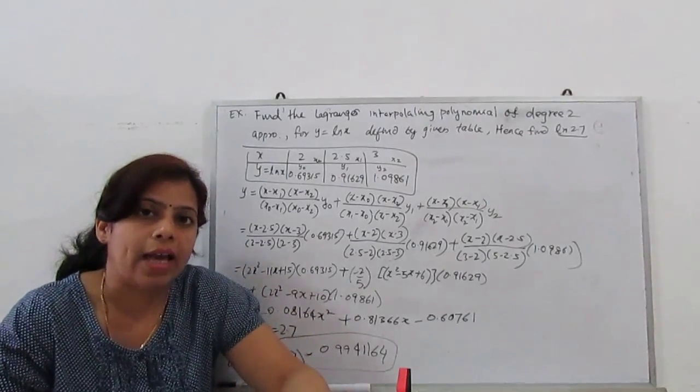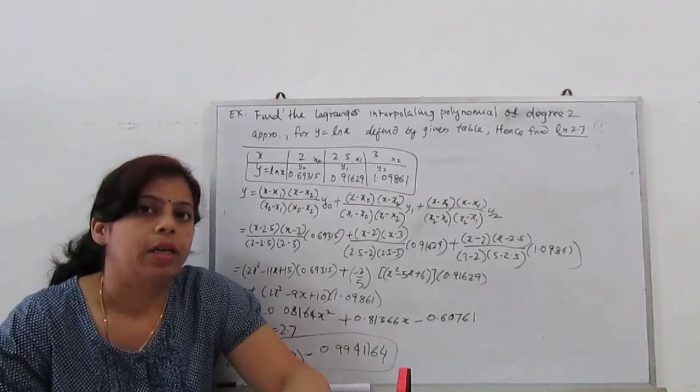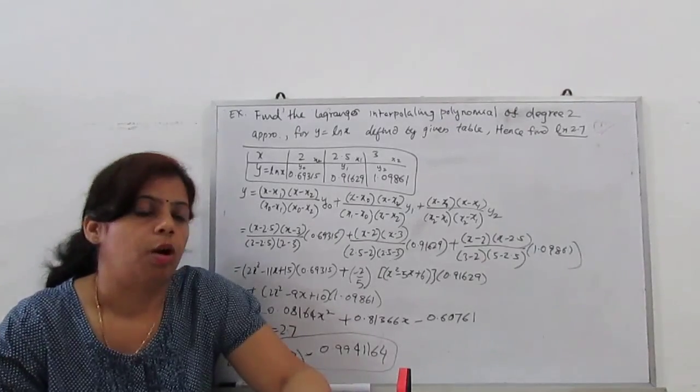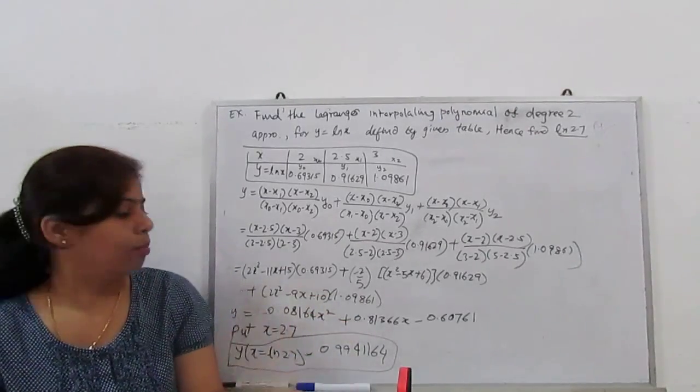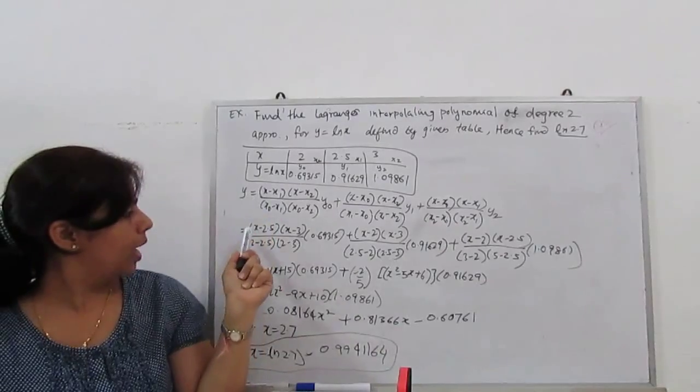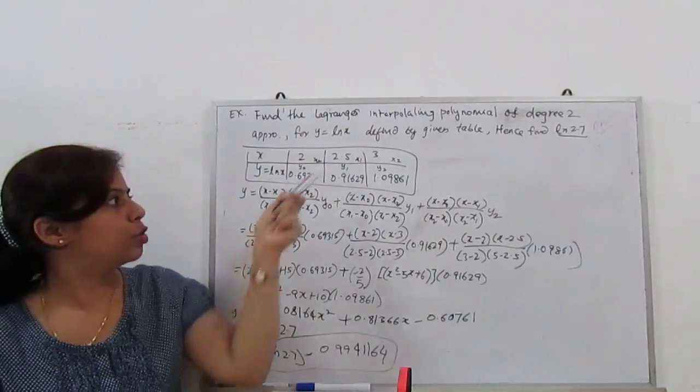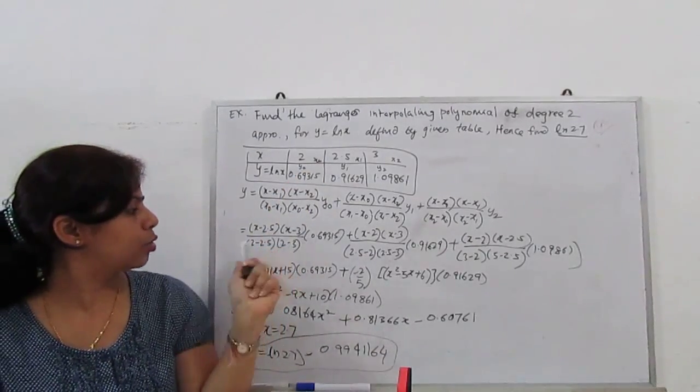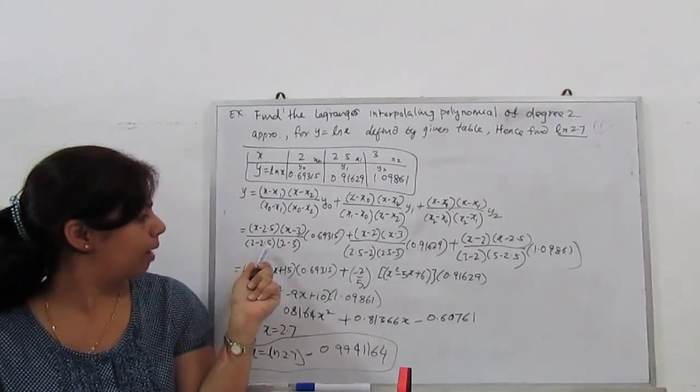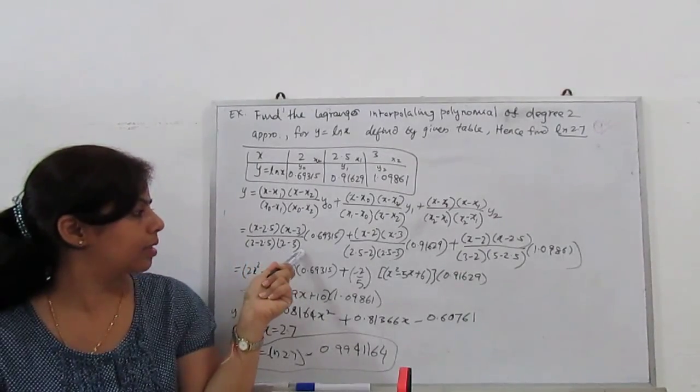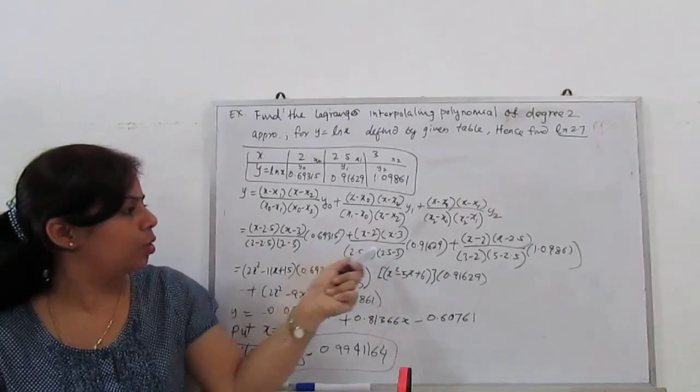Write the formula, substitute the respective values. For finding the polynomial we put x as it is x, so we find an expression in degree 2 of x called polynomial. So (x-x1)(x-x2)/(x0-x1)(x0-x2) times y0 and so on.